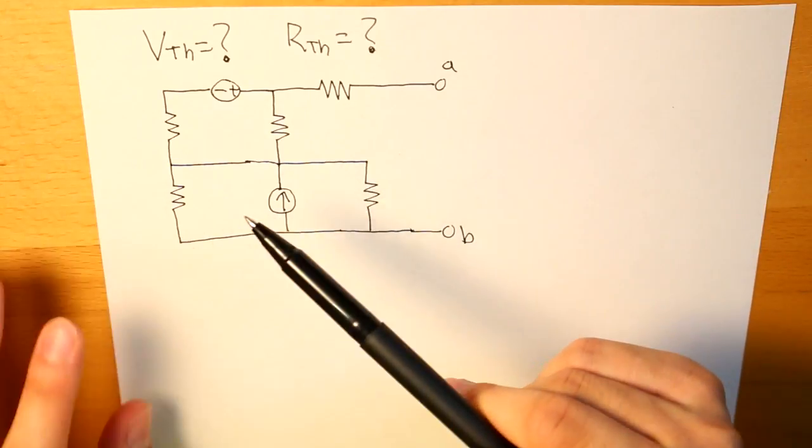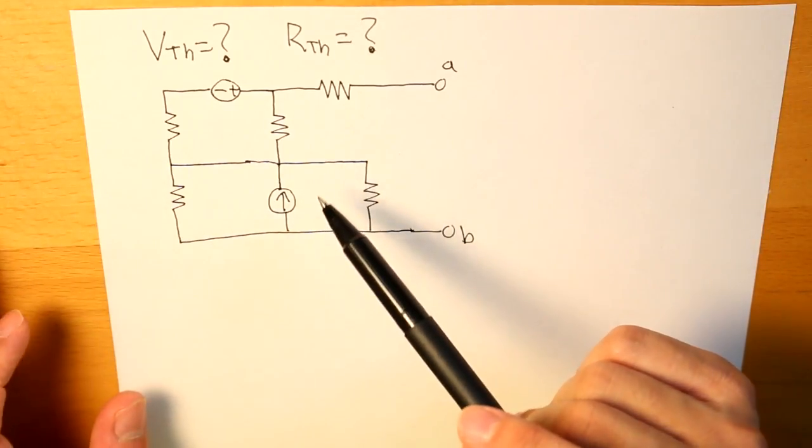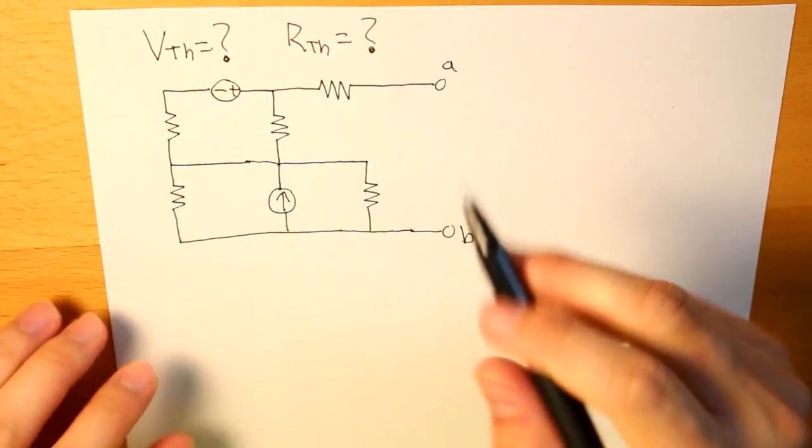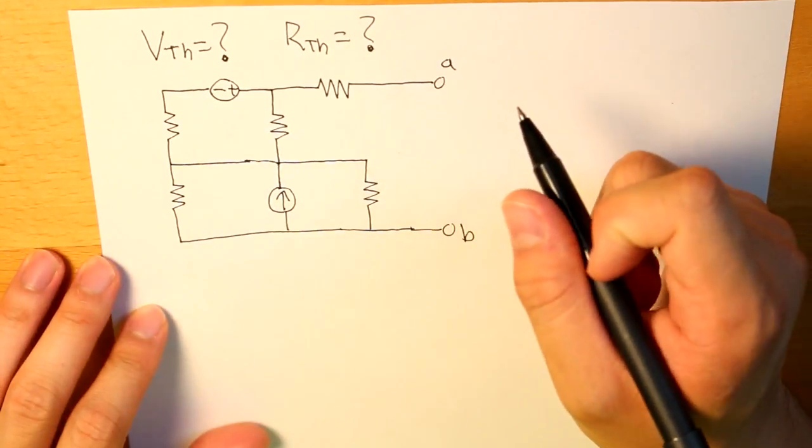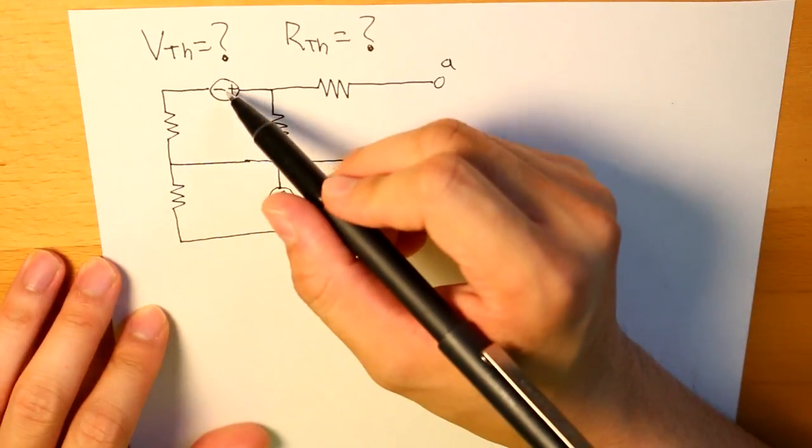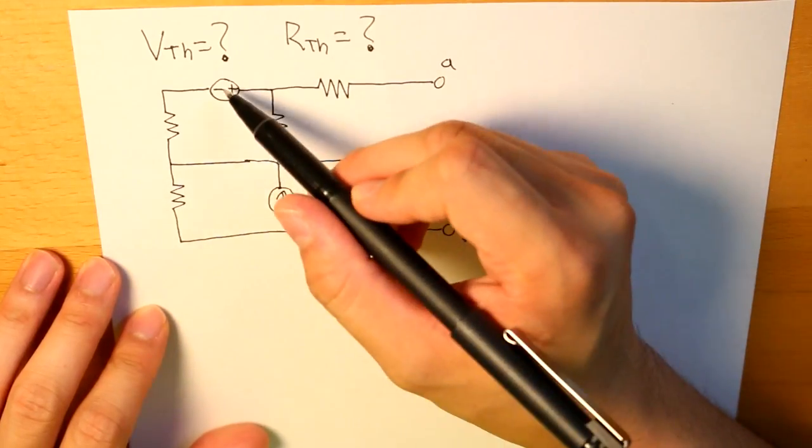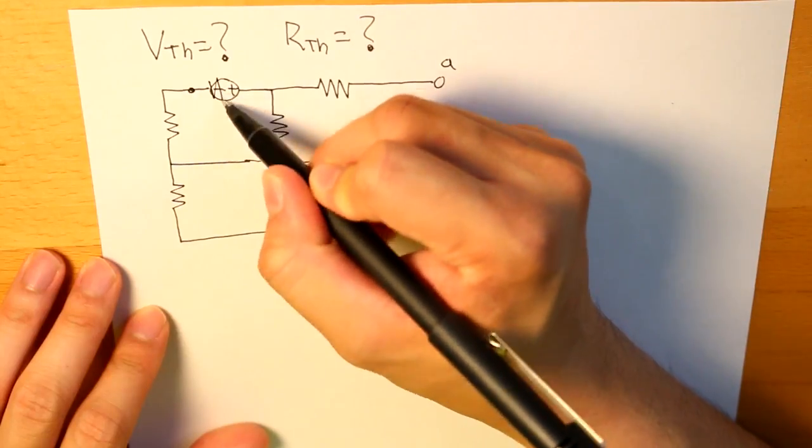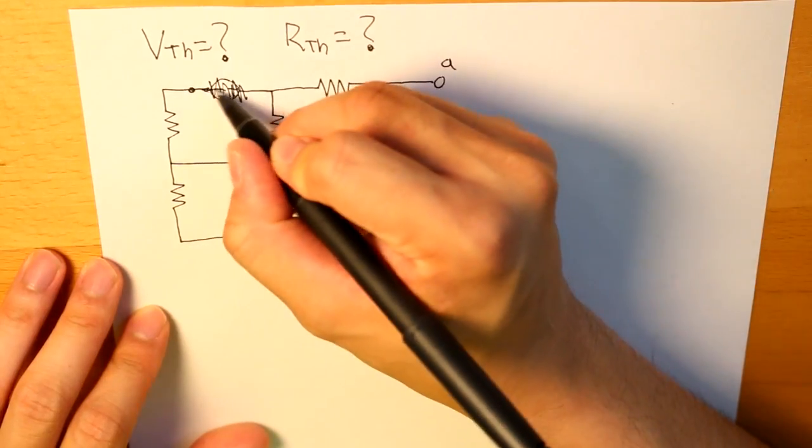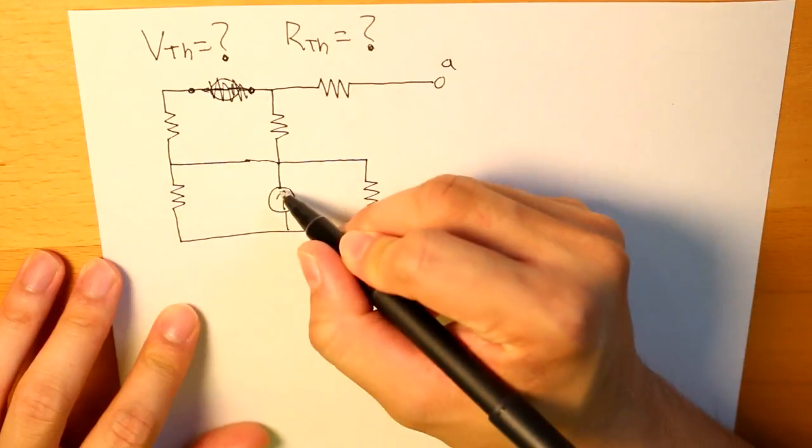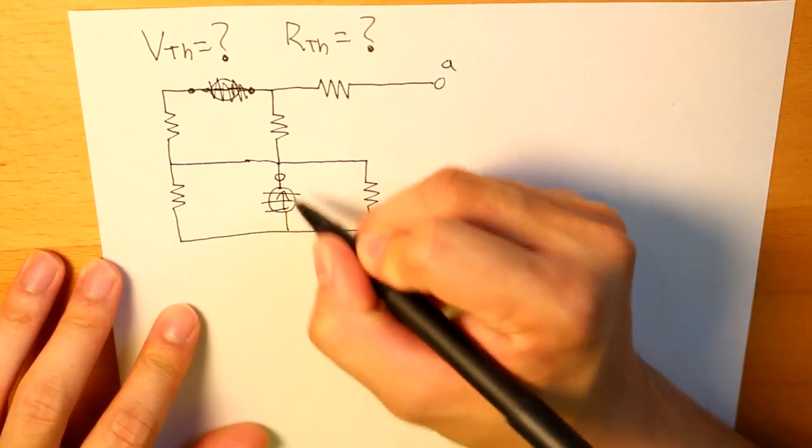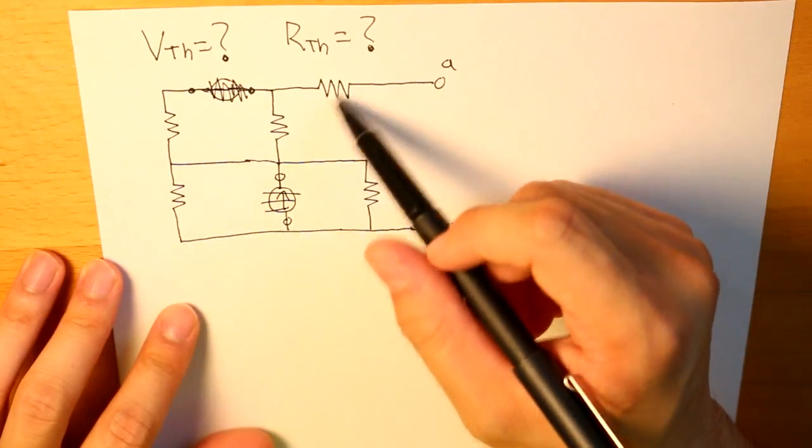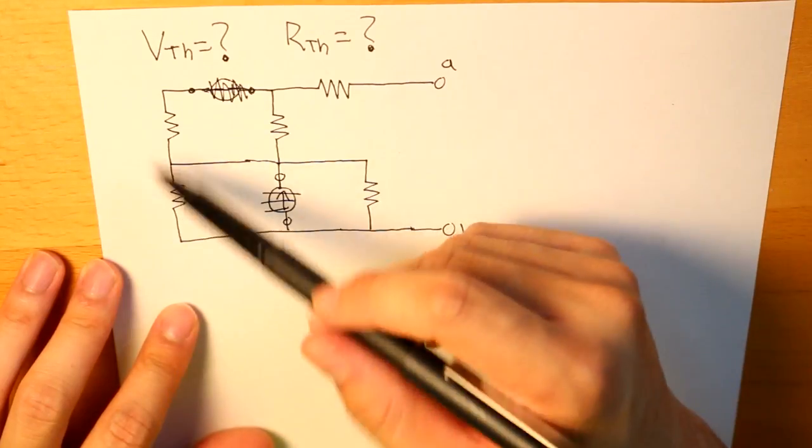And to do that, what we do is we turn off all independent sources and then find the total resistance of it, and that would be our Thevenin resistance. So in this example, what we want to do is we want to short circuit the voltage source, and then we find the